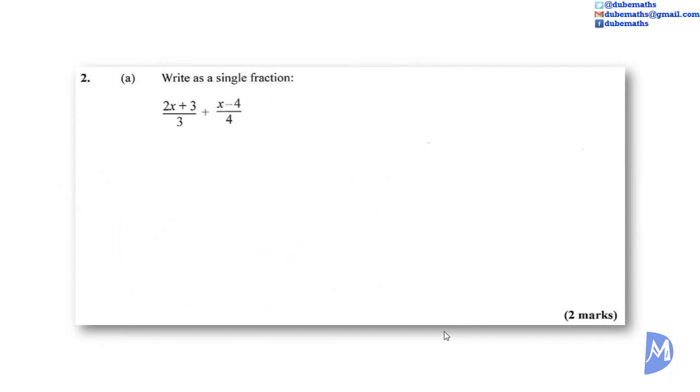To write as a single fraction, we're going to add both fractions together. To add both fractions together, we're going to express both fractions over the same denominator. We're going to use the LCM as that denominator. The LCM of 3 and 4 is 12. So we're going to express the first fraction over 12. To get 12 as the denominator, we needed to multiply the denominator by 4. So we have to multiply the numerator by 4 as well to maintain the equivalence. We're going to add it to the second fraction over 12. 4 to get 12, we multiply by 3, so we multiply by x minus 4 as well.